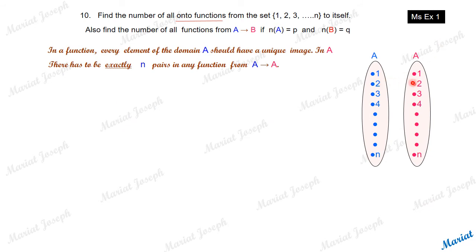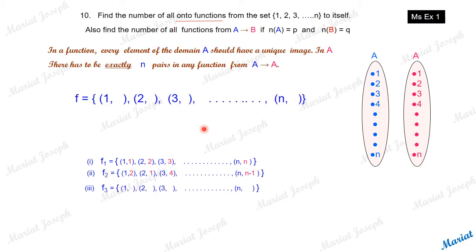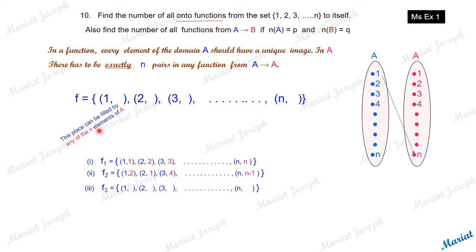Now let us consider functions from set A to A, where both domain and co-domain are {1, 2, 3, ..., n}. We need to find how many onto functions there are. As already discussed, there must be exactly n pairs — no fewer, no more. For the first element, 1, the image can be any of the n elements from the co-domain, so there are n ways to fill this place.